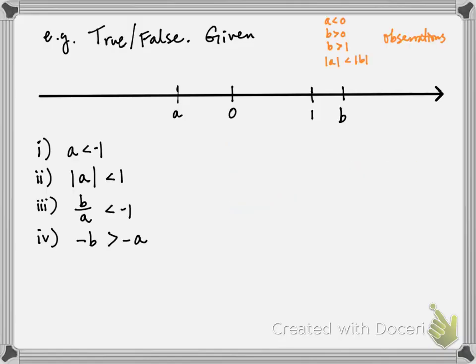For the first problem, we're comparing a with negative 1. So we must know exactly where a and negative 1s are. Well we already know where a is, so let's identify where negative 1 is. Well remember negative means that we're going to take the mirror image of 1. So this is how much 1 is. We'll take exactly that same amount and then put it on the other side of 0. This gives us the location of negative 1. And we notice that a is to the right of negative 1, which means that a is greater than negative 1. So the answer to the first part is false.